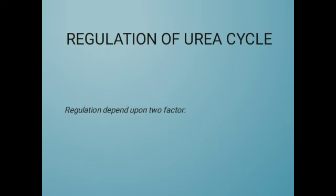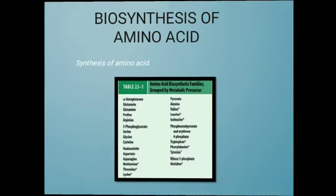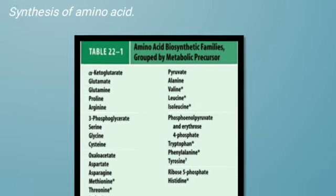Next is the regulation of the urea cycle. Regulation depends on two factors: the amount of urea cycle enzymes and the concentration of acetylglutamate and ornithine. The amount of enzyme depends on daily consumption of protein, and acetylglutamate is the activator of carbamoyl phosphate synthetase.